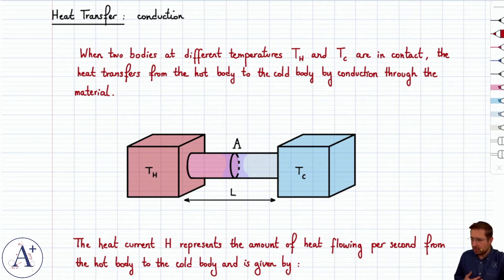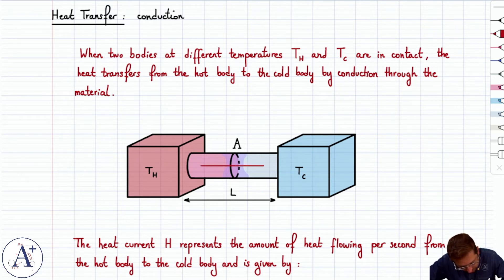As an idealization, let's consider the two cubes here. One maintained at a temperature TH, the other one maintained at a temperature TC. Of course, TH is greater than TC. And as a result, heat will flow from the hot body to the cold body. This is our flow of heat.